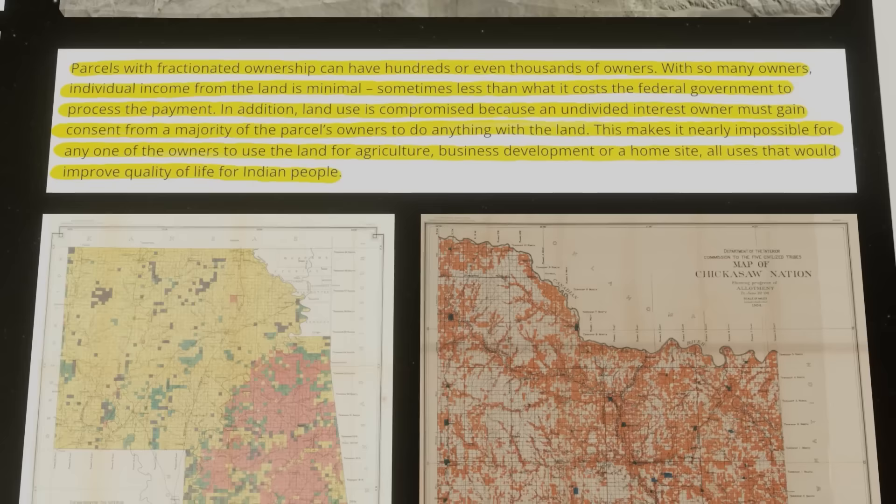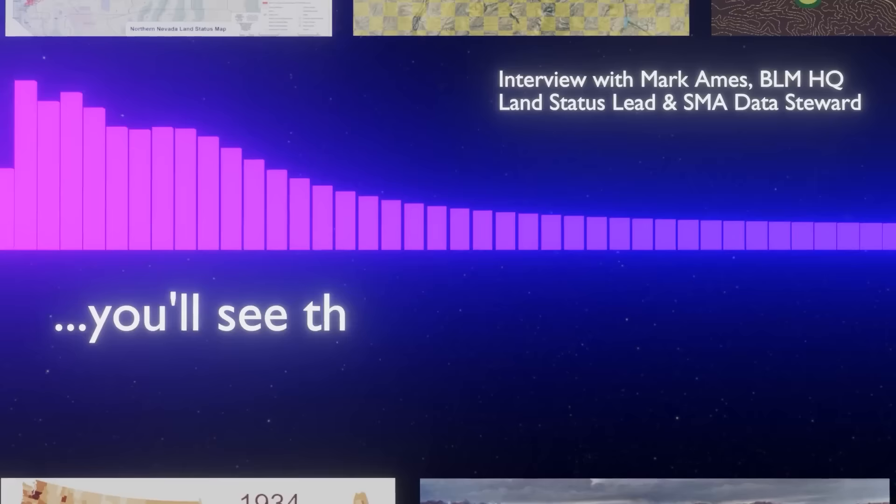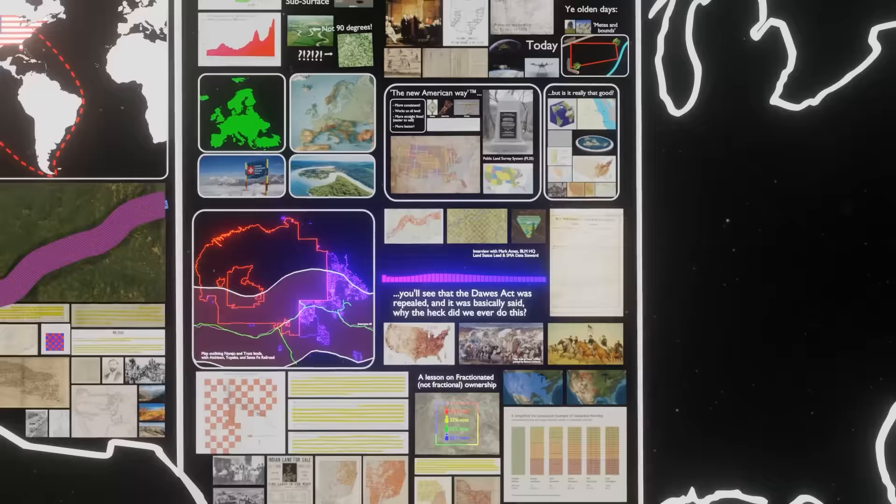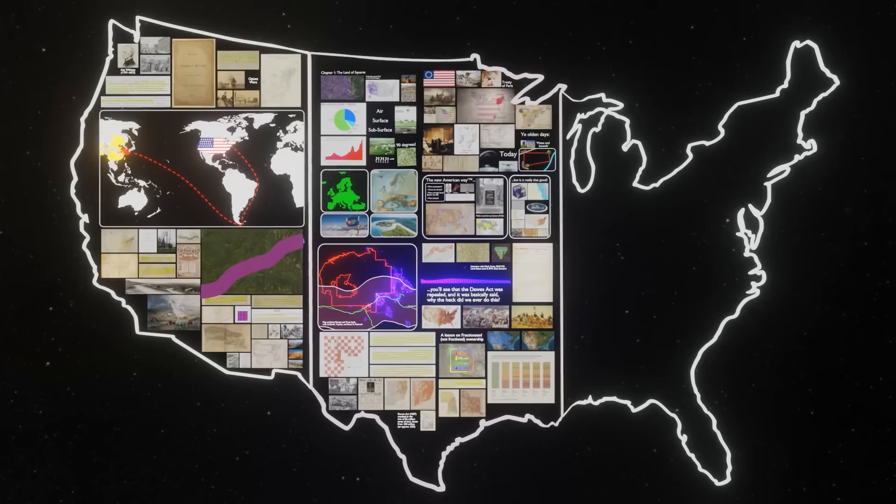I want to be clear: the Dawes Act didn't just target the Navajo specifically — there are many, many more examples of this land-grant policy affecting other tribes. Back to Mark: 'The Dawes Act was repealed, and it was basically said, why the heck did we ever do this? But looking at it 200 years later, as we put together all the bits and pieces of the land at the reservation today, we finally see what a century of colonial rule does to the land and the people living on that land.'